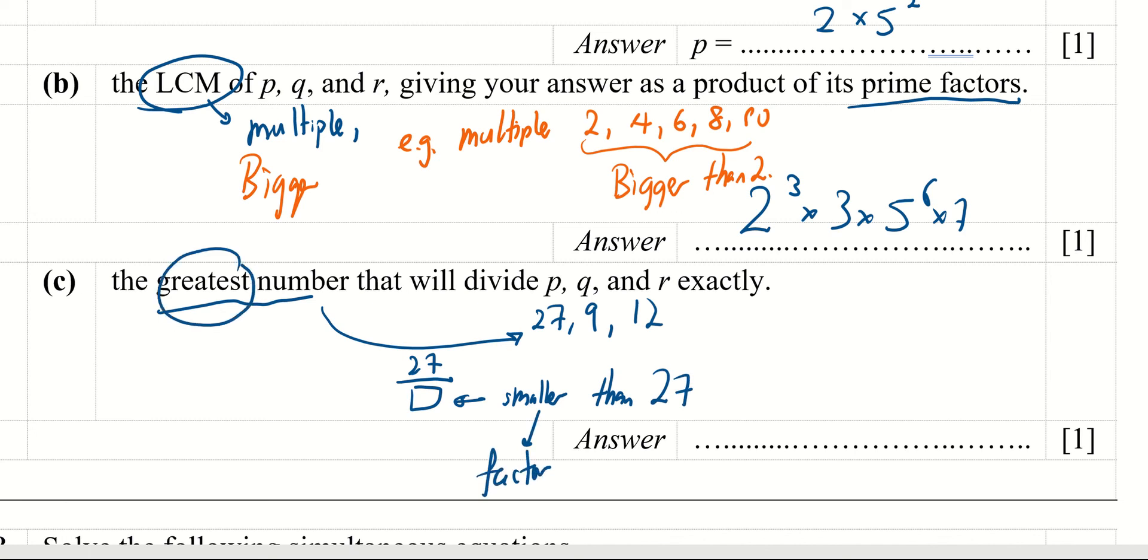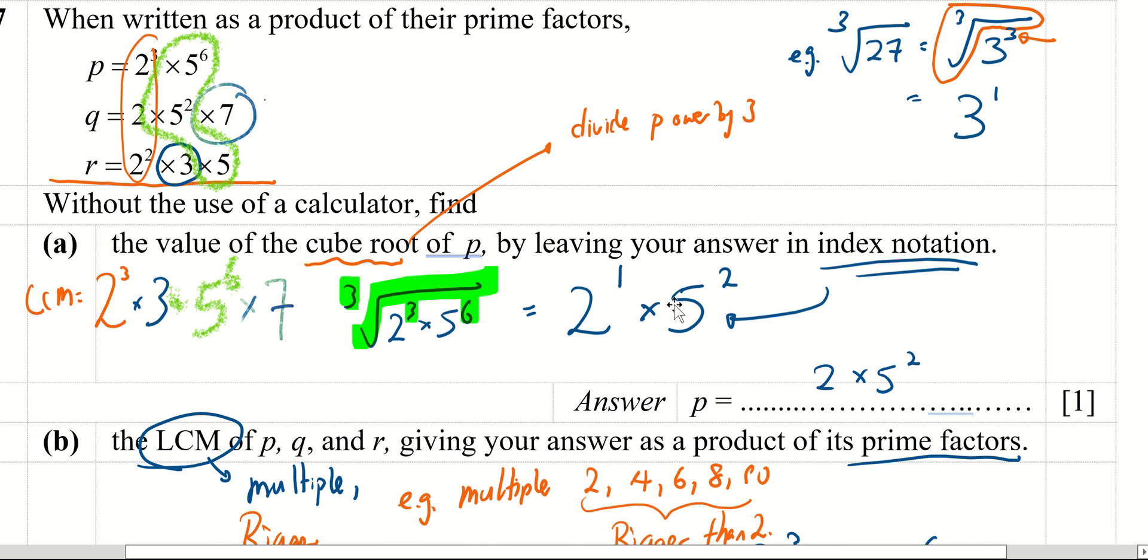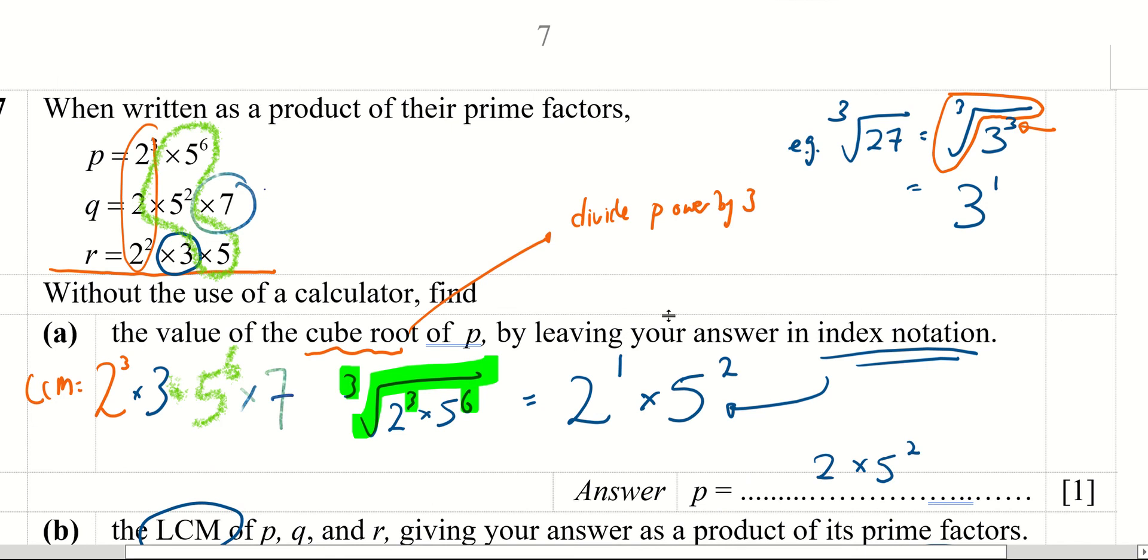So the idea of smaller is actually a factor. Which means they want the greatest, highest factor. So it must be a common factor. So this is an HCF question. Factor is smaller, so I will choose a smaller number.